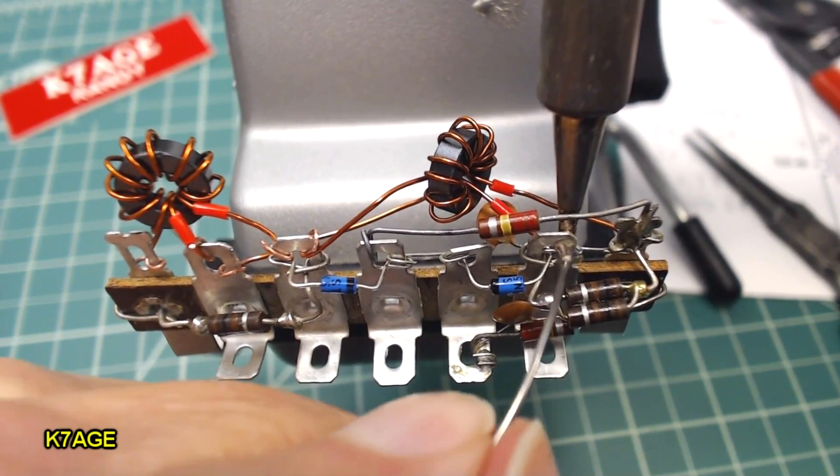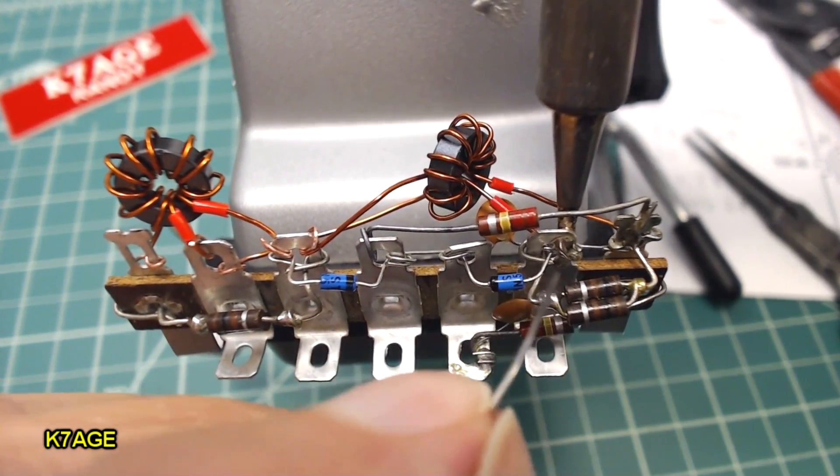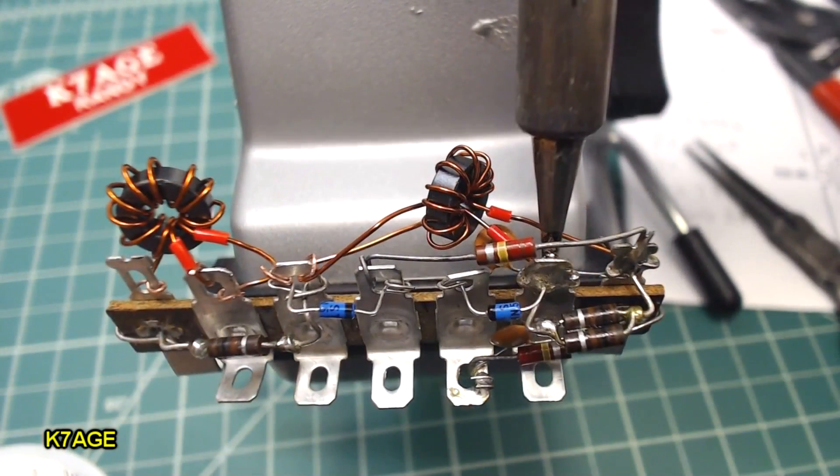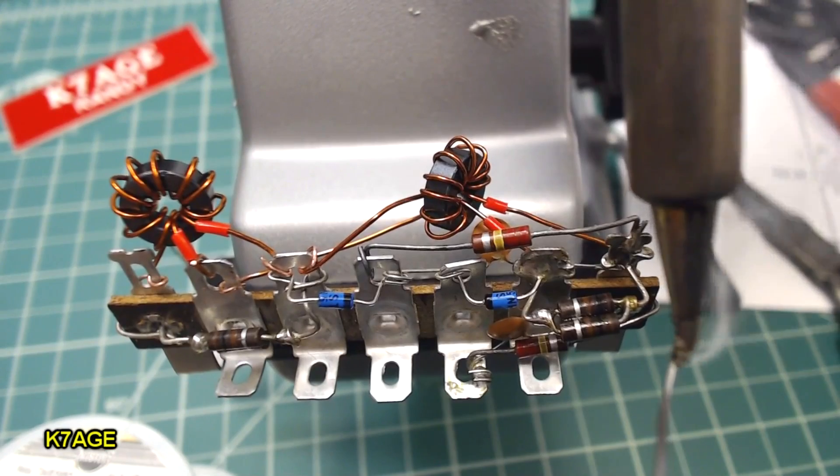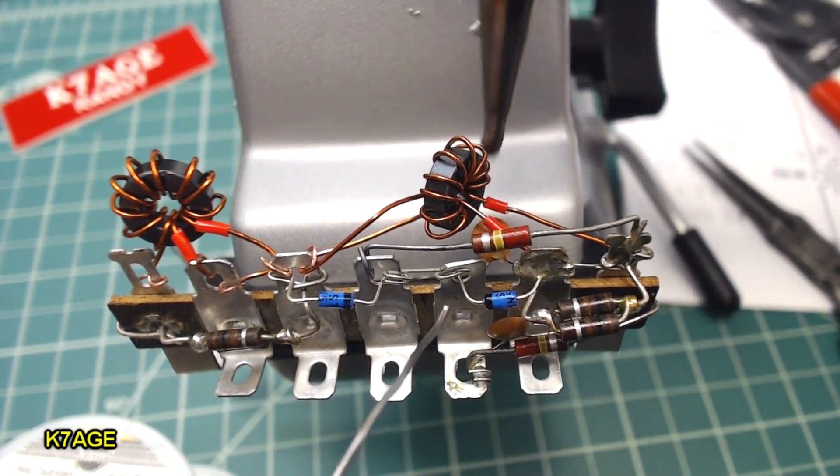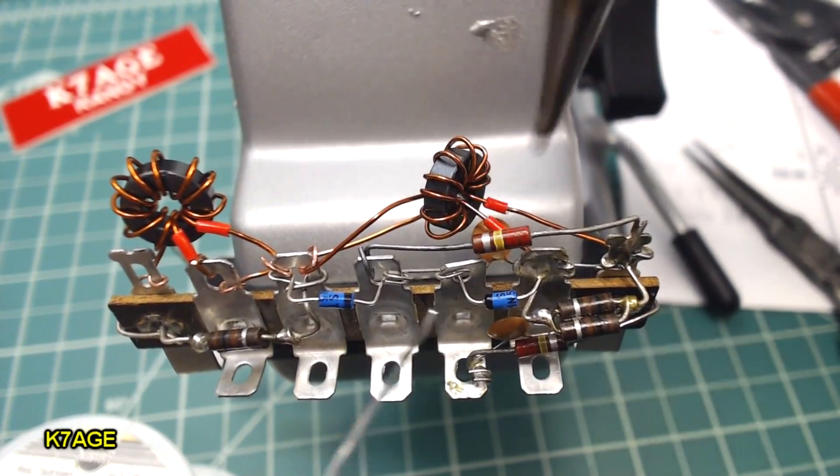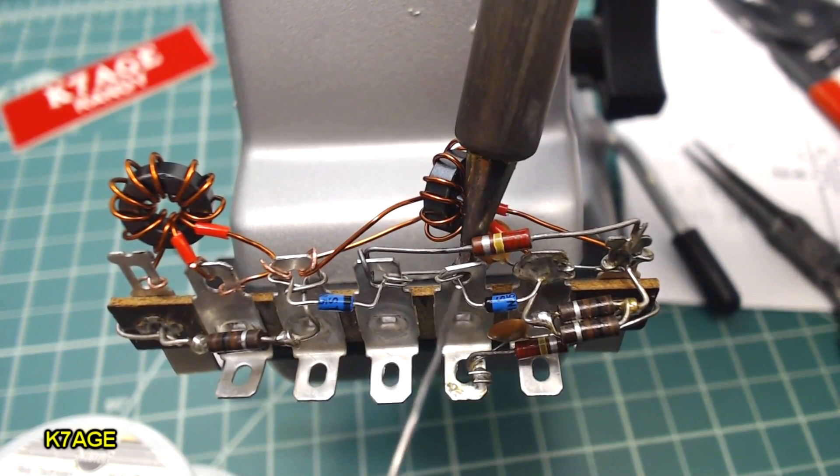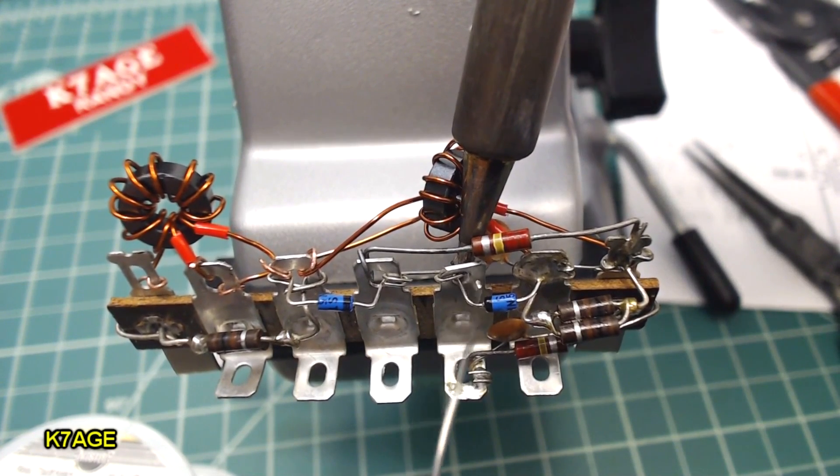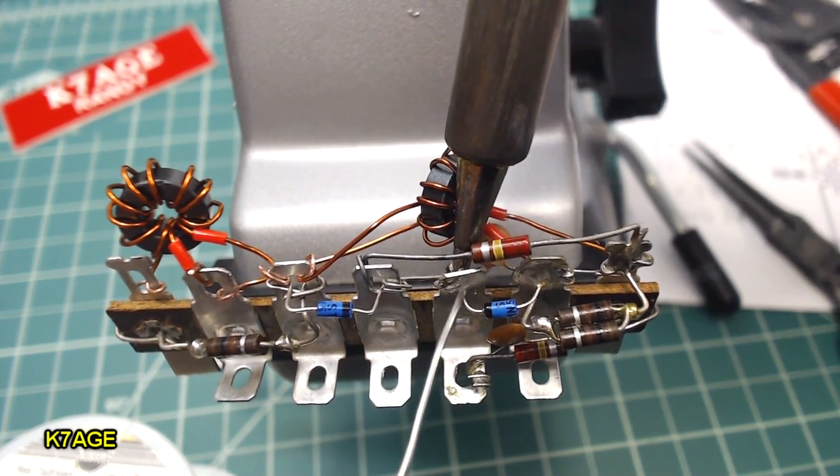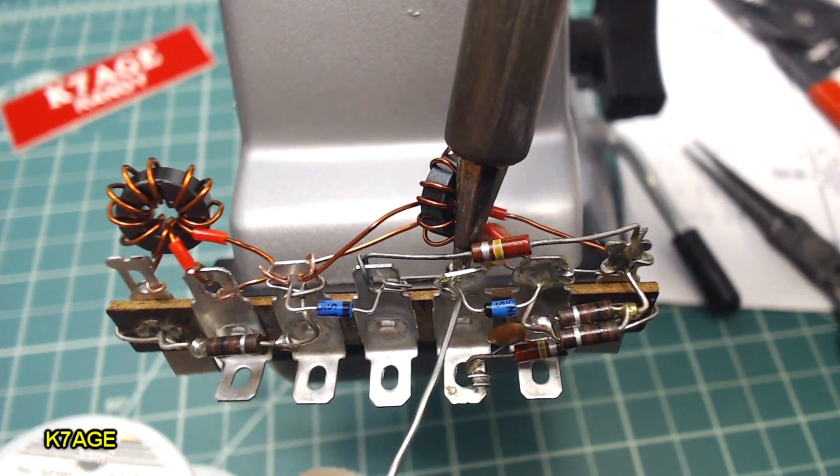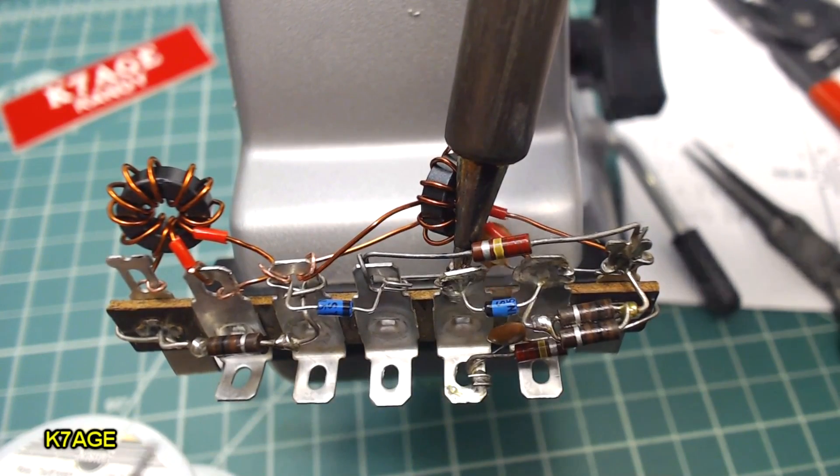And everything will flow. There it is, nice and hot and filled. Just a dab on the iron. That helps with the heat transfer. Again, feed the solder in and let it flow. Just give it time. It'll flow. Fill up the hole in the solder lug and you're all set.